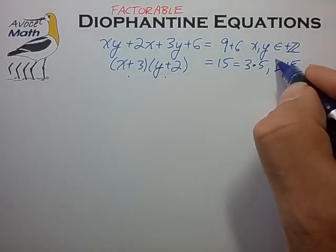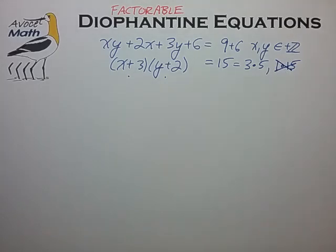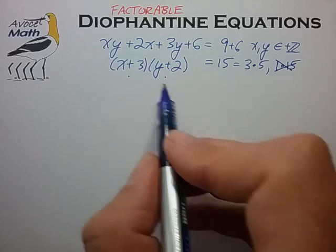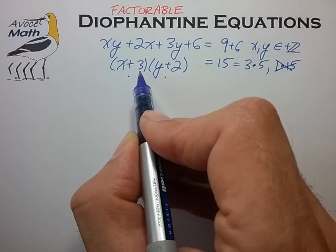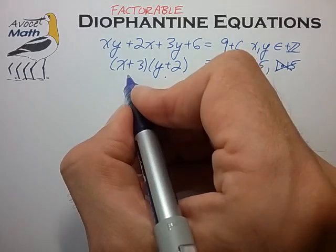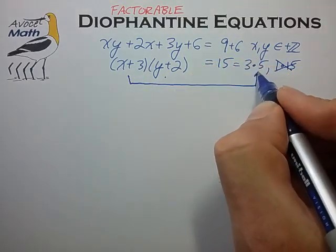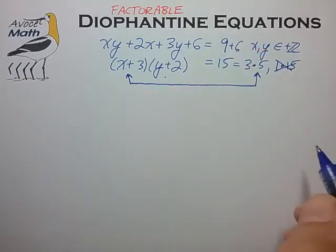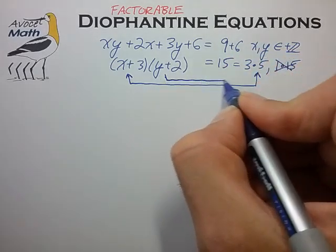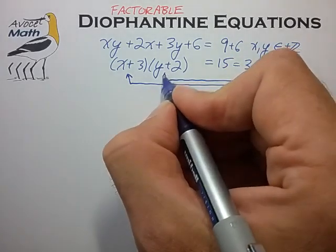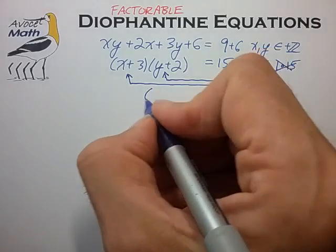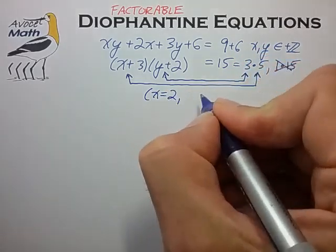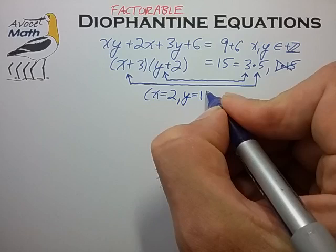That doesn't match up with the second factor pair, so we can eliminate that from consideration. We also notice that the factor x plus 3 has to be 4 or larger. So the only possible factor alignment is for x plus 3 to equal 5 and y plus 2 to equal 3. This leads to one unique solution: x equals 2 and y is equal to 1.